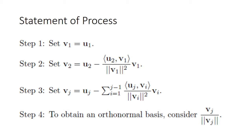The first step is to take our first basis vector, labeled u1, and set it equal to the first vector in our orthogonal set, V1. So we essentially set V1 equal to U1. The second step is to consider the difference between our U2 vector and the orthogonal projection of U2 onto V1, as given by the formula at step 2. The difference between these two will be a vector orthogonal to V1, generating the second orthogonal vector V2.